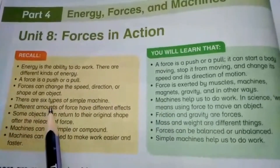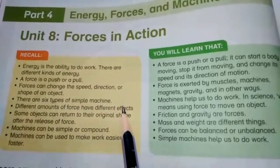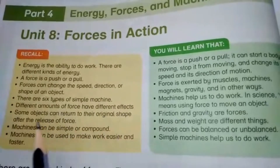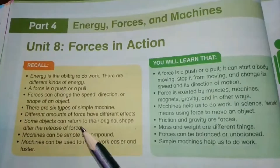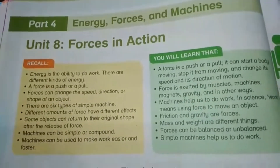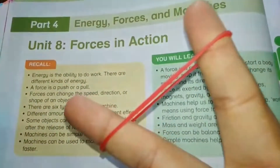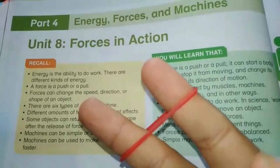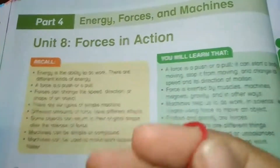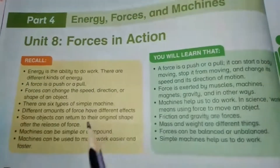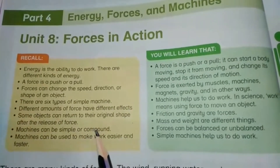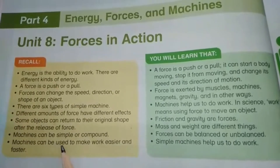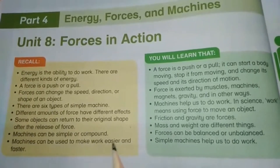Different amounts of force have different effects. Some objects can return to their original shape after the release of force. For example, a rubber band resumes its normal shape after being stretched or compressed. Machines can be simple, compound, or complicated, and can be used to make our work easier and faster.